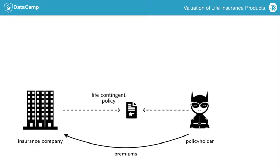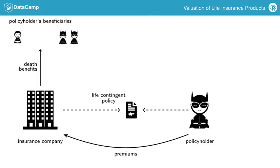Our hero considers buying a life insurance product that would pay a certain death benefit if he dies early. This death benefit can be paid to his kids, his business partners, even his bank, in case he has a mortgage that is not settled yet.